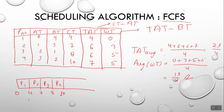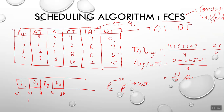The problem with this algorithm is known as the Convoy Effect. For example, if process P1 has a burst time of 200 units and P2 has only 20 units, P2 has to wait a long time. Think of it like a slow vehicle crossing a road blocking everything behind it — all other traffic is blocked. This Convoy Effect can be solved with the Shortest Job First algorithm, which we'll see in the next video.